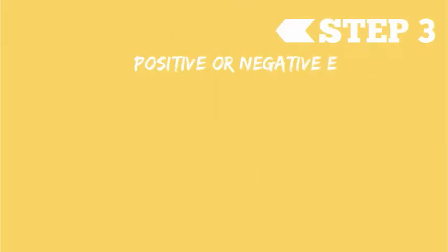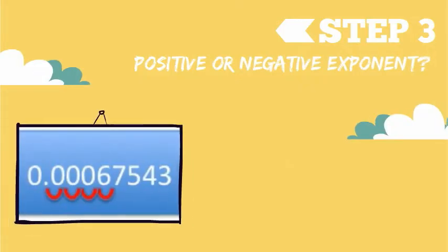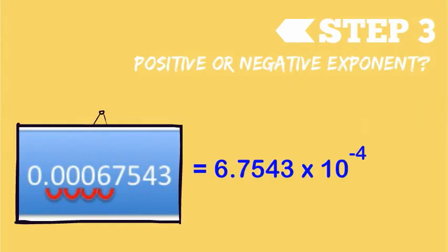On the other hand, if we moved our decimal to the right to obtain the number between 1 and 10, that tells us that we started with a very small number and that our exponent is going to be negative.